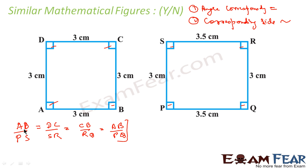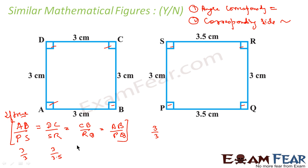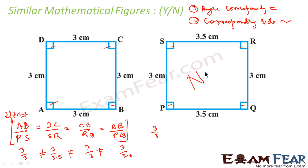If this is true, then these two figures are similar, else not. Let's try to prove if they are true or not. AD is 3 and PS is 3, so this becomes 3 by 3. DC is 3 and SR is 3.5. CB is 3 and RQ is 3. AB is 3 and the corresponding side is 3.5. If you see, these are not equal because 3 by 3 is not equal to 3 by 3.5. Even if one is not equal, it means the condition fails. So they are not equal — not similar.